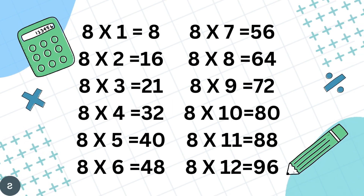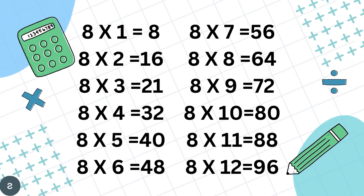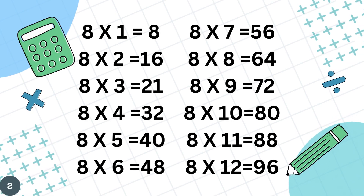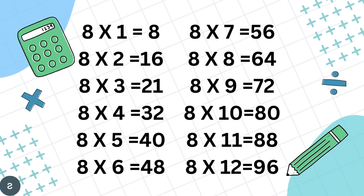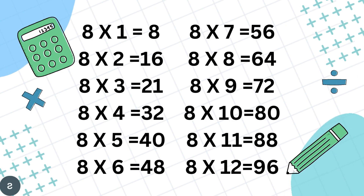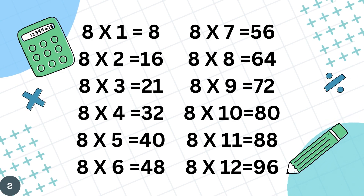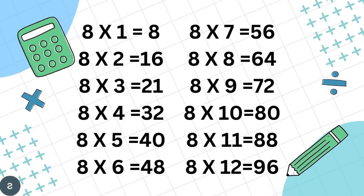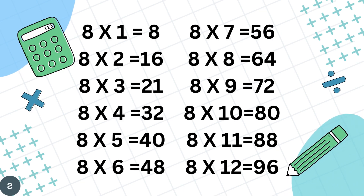Table of 8. 8 1's are 8, 8 2's are 16, 8 3's are 21, 8 4's are 32, 8 5's are 40, 8 6's are 48.